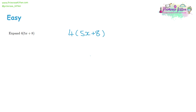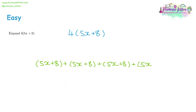We have four lots of 5x plus 8. What this means is that we've got 5x plus 8 four times, so we can write that bracket out four times and add them all together. We've got 5x four times, so four times five gives us 20x. Then four lots of eight gives us 32. So the answer is 20x plus 32.